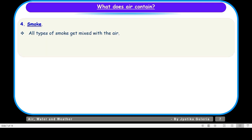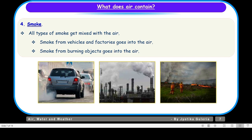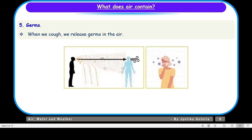The next component of air is smoke. All types of smoke get mixed with the air. Smoke from vehicles and factories goes into the air, and smoke from burning objects goes into the air as well. The smoke coming out of vehicles, factories, or because of burning of things becomes part of the air. And if there is no check on the emission of smoke in the air, it causes air pollution.